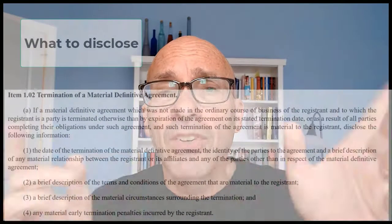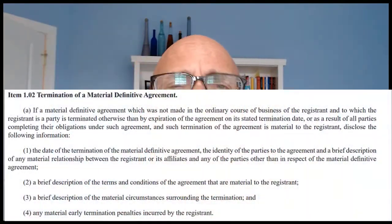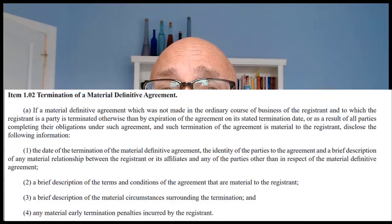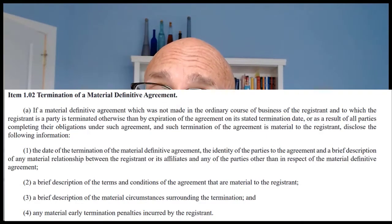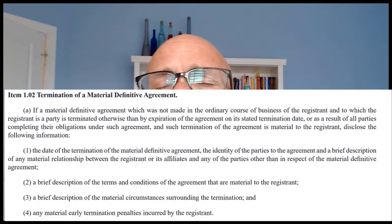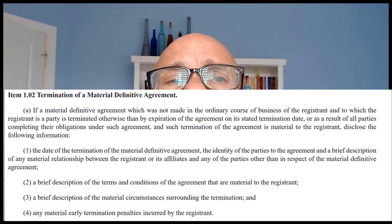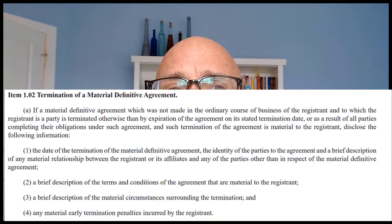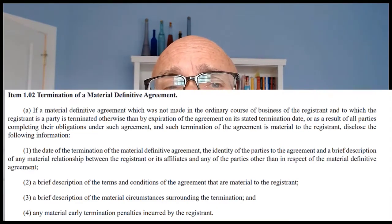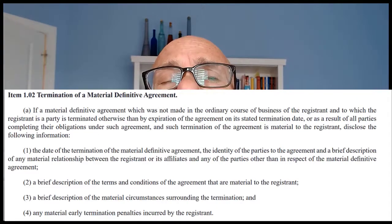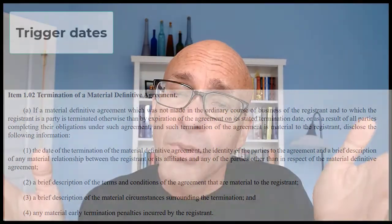What to disclose? There are four things in Item 1.02(a). First, the date of termination, the parties to the agreement, and any relationship between the parties other than due to the original contract. Second, the terms and conditions of the original contract. Third, the circumstances of the termination. And fourth, any early termination penalty.